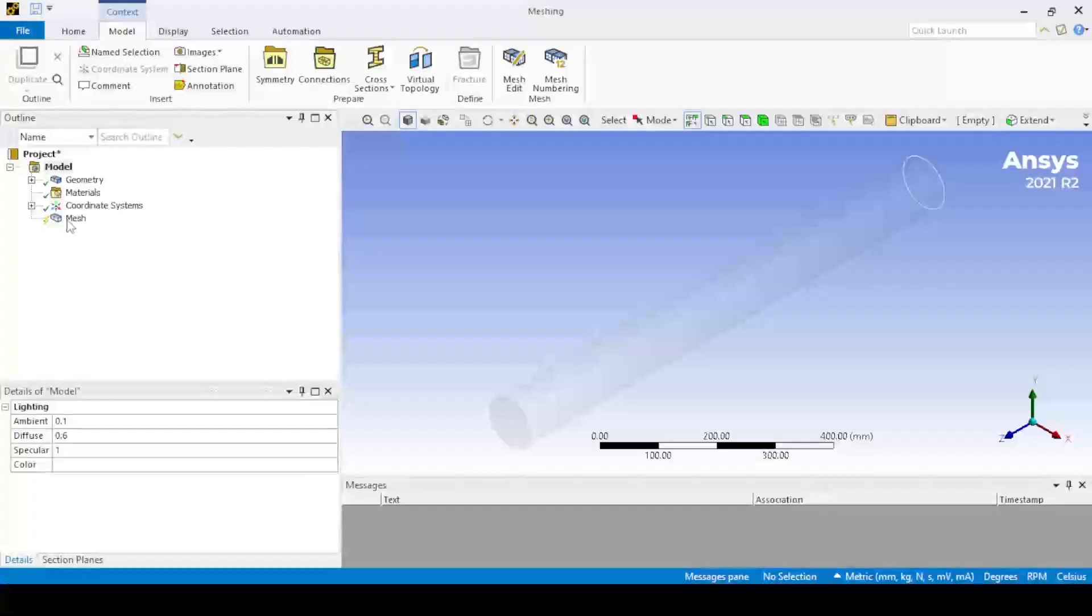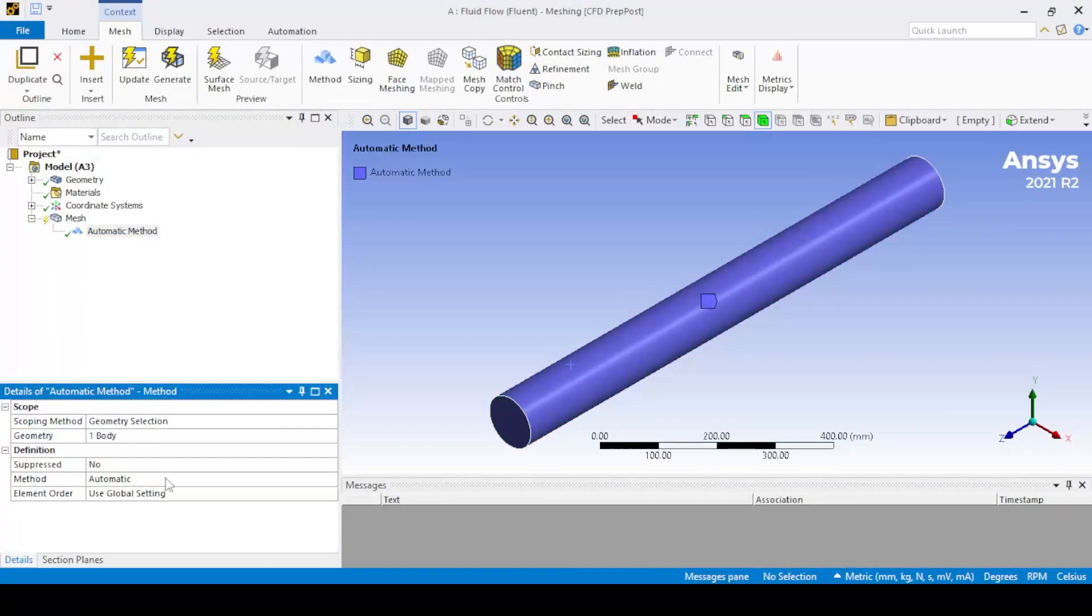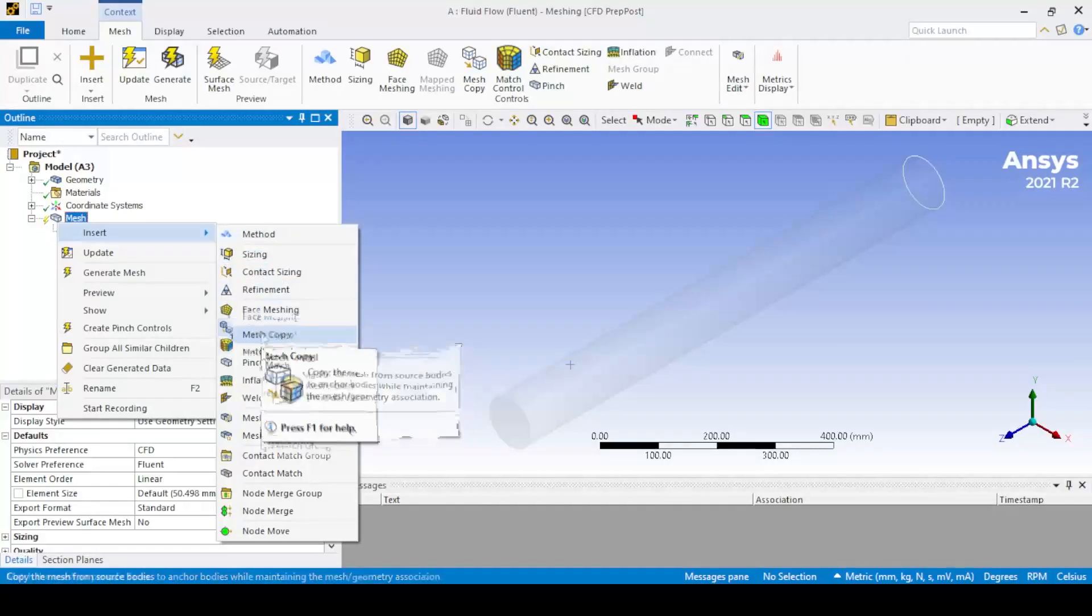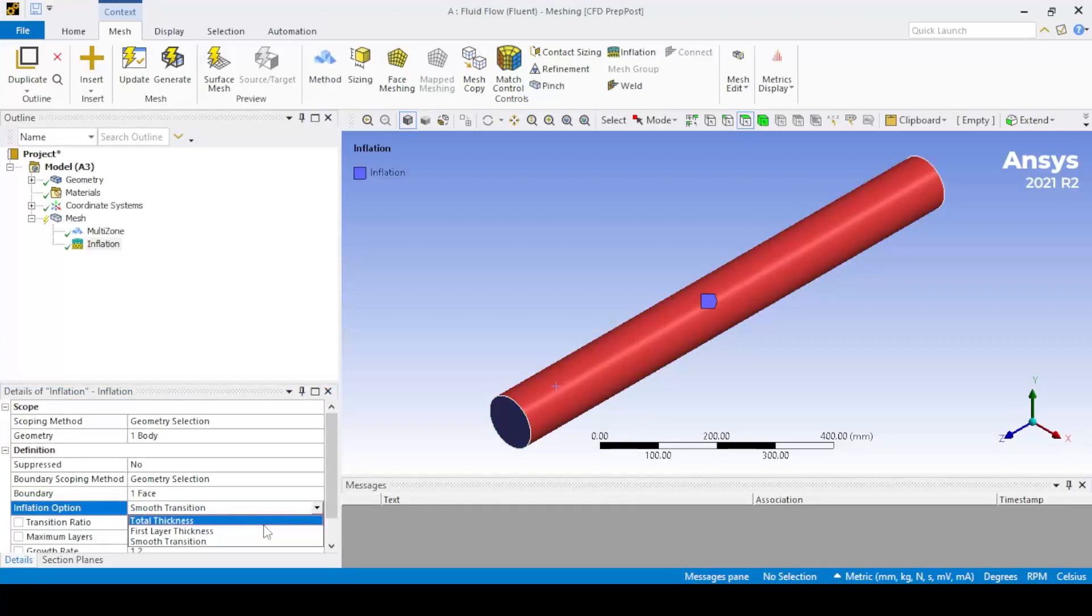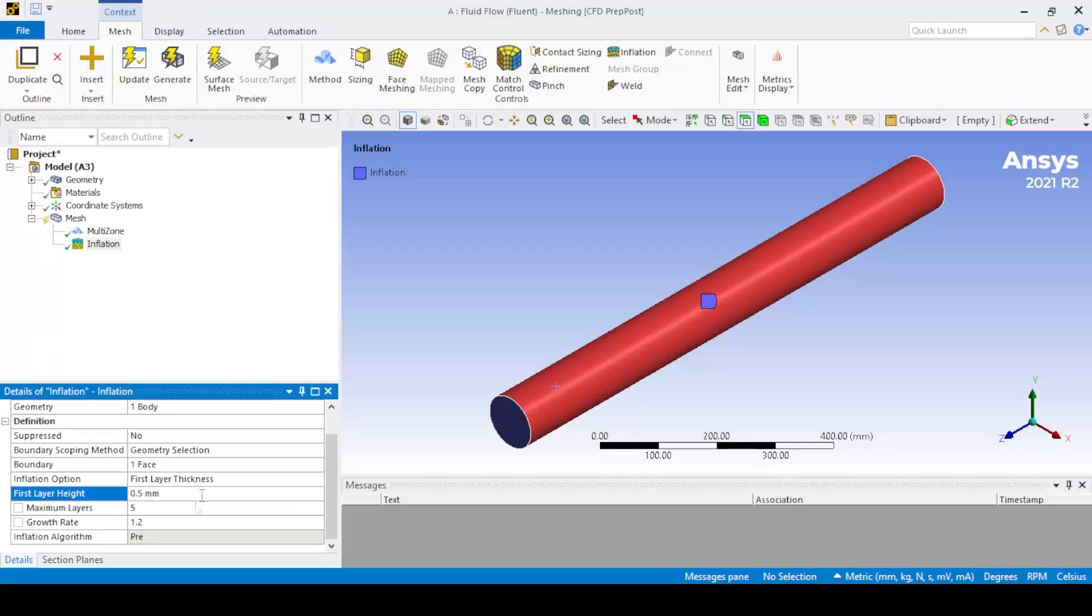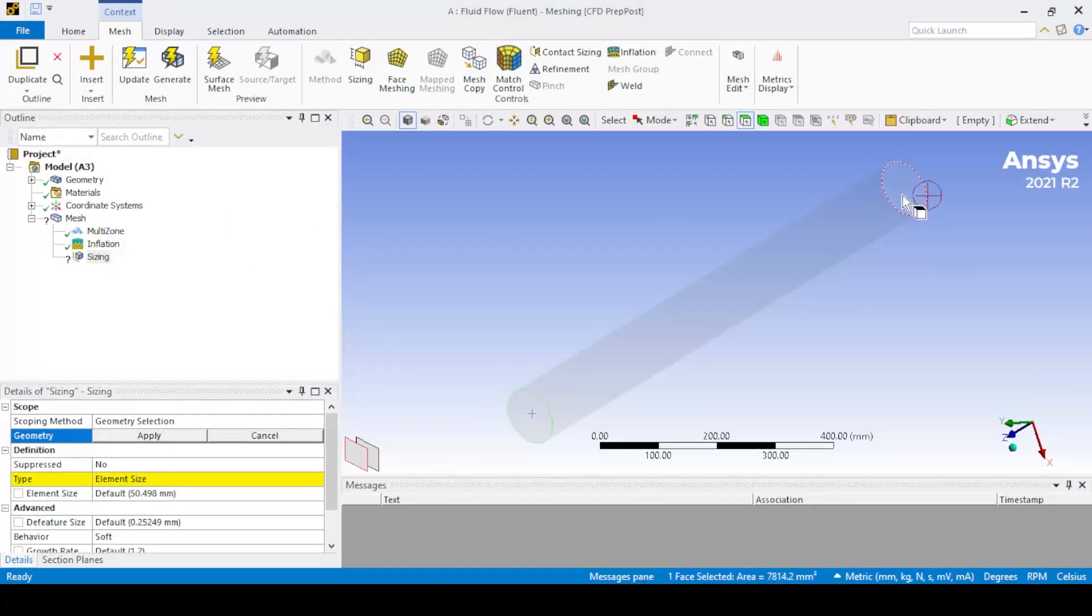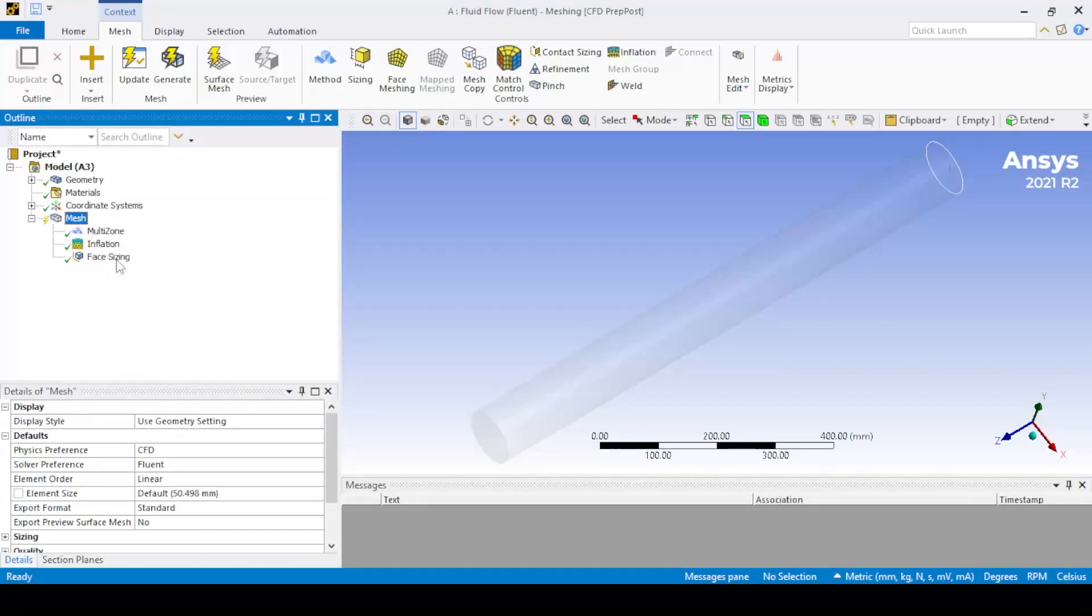Close design modeler and open mesh. Apply multi-zone method to the body, and change sweep element size to 5 mm. Add inflation layer with given parameters. Apply face sizing on both faces.